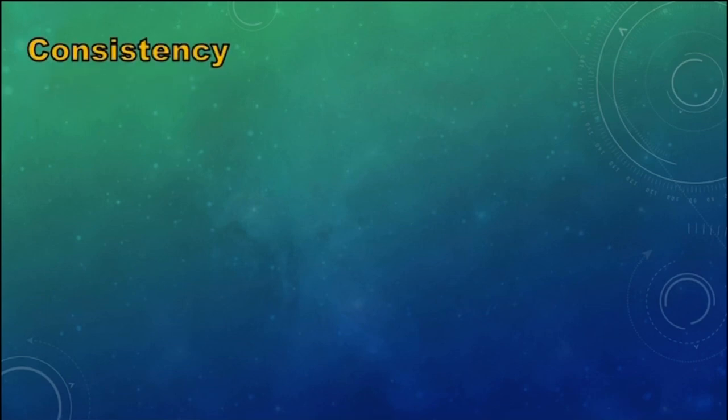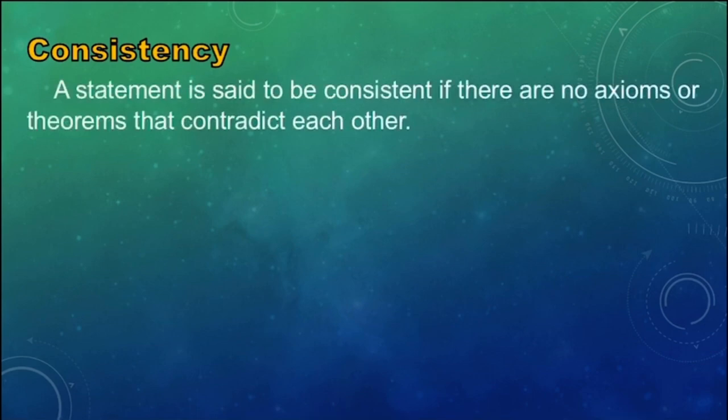The following properties of an axiomatic system should be considered to establish mathematical truth. The first one is consistency. A statement is said to be consistent if there are no axioms or theorems that contradict each other.